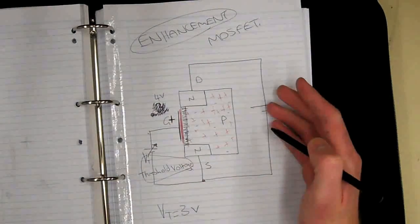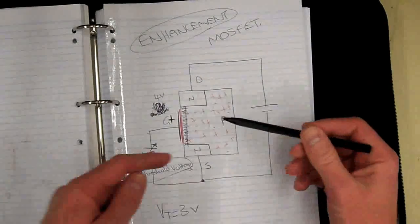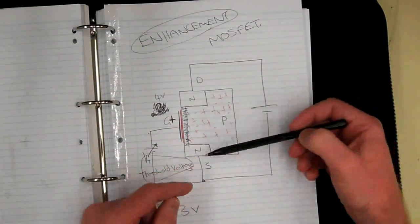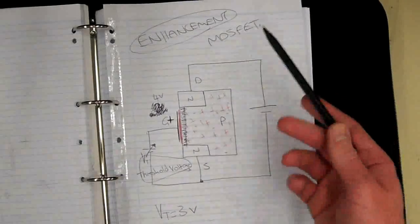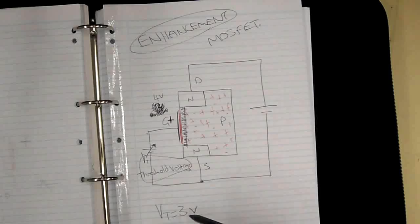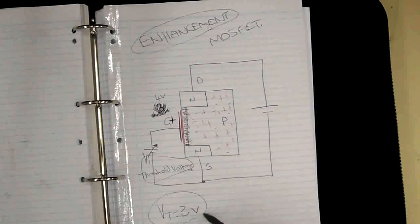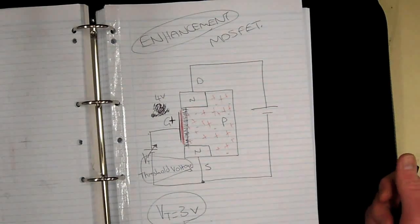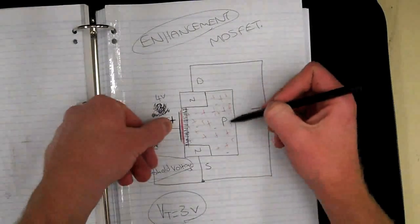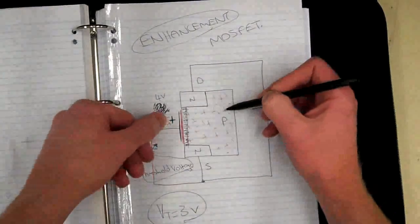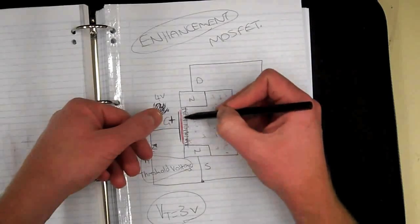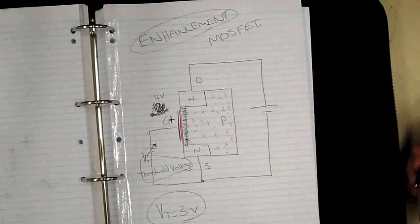The Enhancement MOSFET will only work by enhancing the channel, and you only get current flow once the gate reaches a certain potential — in this case, 3 volts. Once we reached 3 volts, we attracted enough minority carriers to form a channel and get current flow.